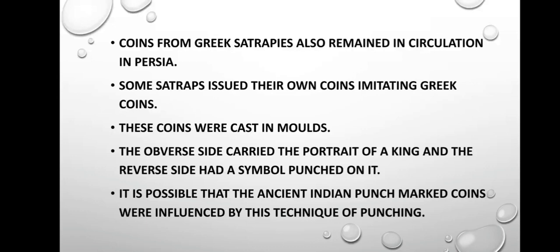Along with the Achaemenid coins, coins from Greek satrapies also remained in circulation in Persia. Some satraps issued their own coins imitating Greek coins. These coins were cast in molds; one side usually carried the portrait of a king and the reverse side had a symbol punched on it. It is therefore possible that the ancient Indian punch-mark coins were influenced by this technique of punching.